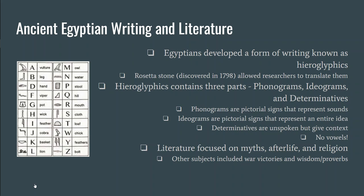Hieroglyphics contain three different parts: phonograms, ideograms, and determinatives. Phonograms are signs that represent sounds — for example, a small oval can represent the sound 'ra.' Ideograms represent an entire idea — the same small oval can represent a mouth. The determinative is unspoken context; you don't speak it, but it helps you understand what the phonograms and ideograms mean. Hieroglyphics can also be written in any direction — you have to look at which way the faces are looking. There are no vowels in hieroglyphics.